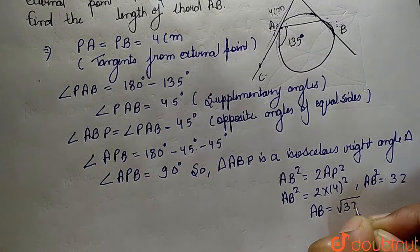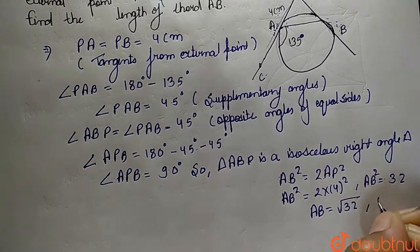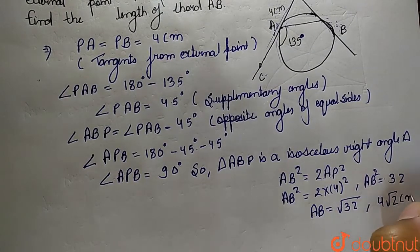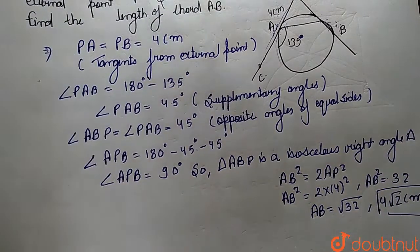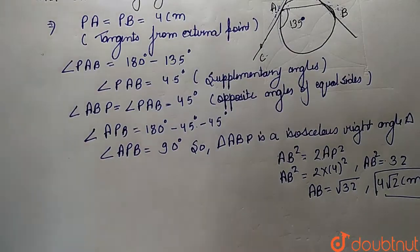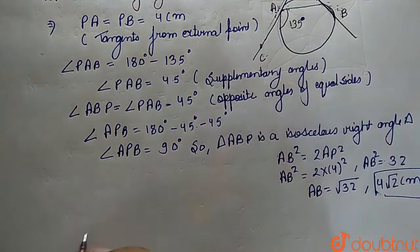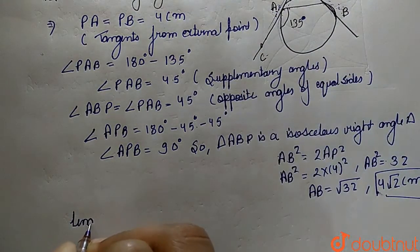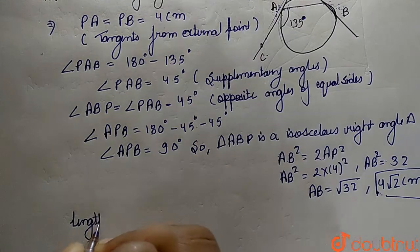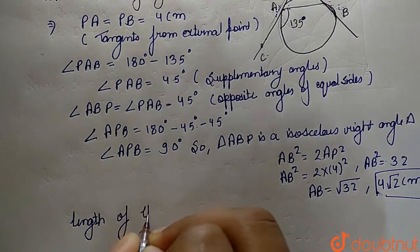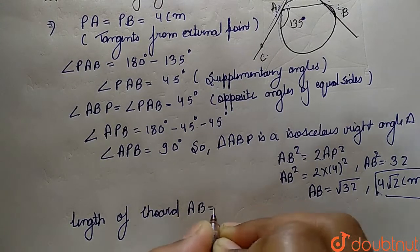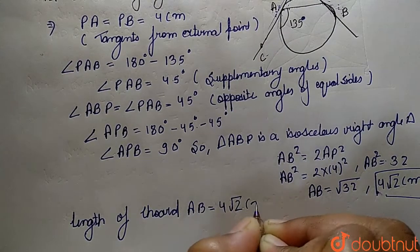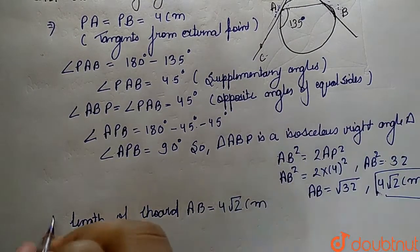Therefore, AB equals the square root of 32, which we can write as 4 times root 2 centimeters. So the length of chord AB equals 4√2 centimeters. This is our required answer.